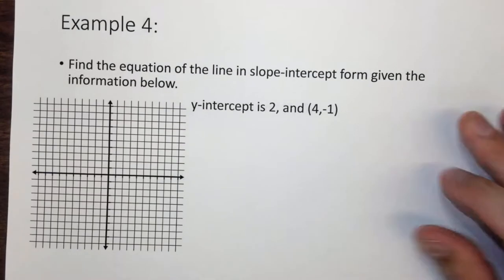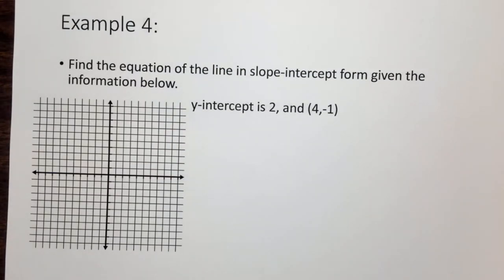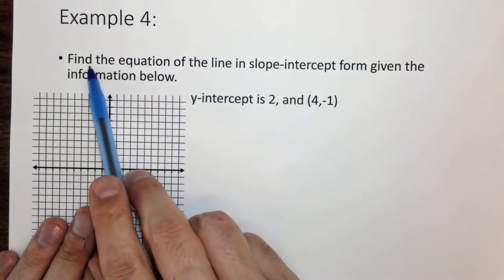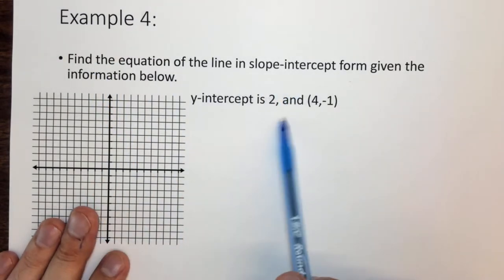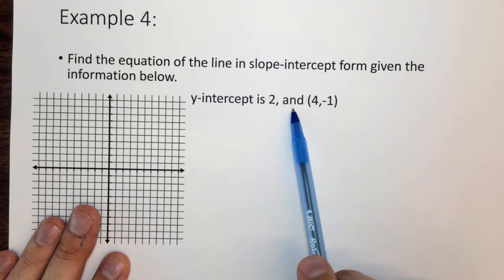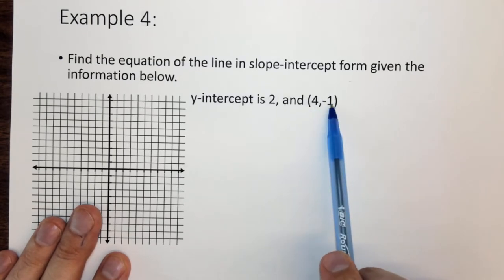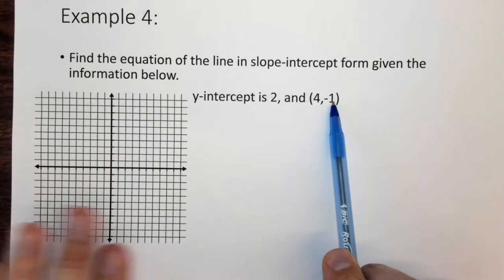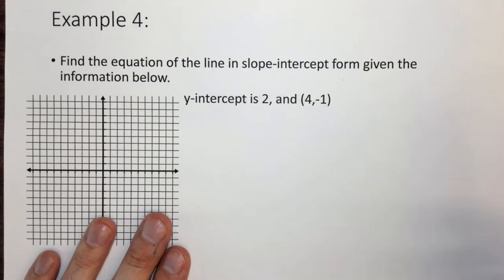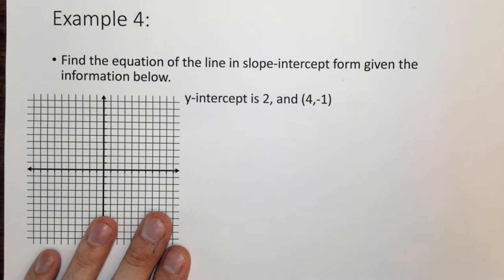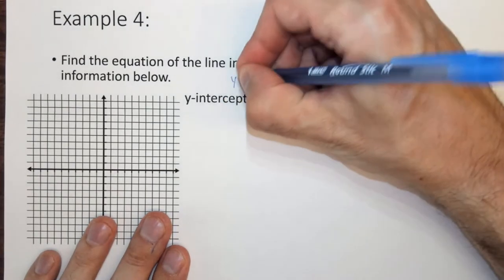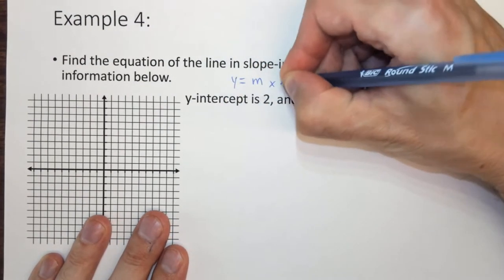In this case, we have find the equation of the line for this. So we have the y-intercept is 2, and there's a point called 4, negative 1. Well, let's do it mathematically first, and then we'll draw the line.